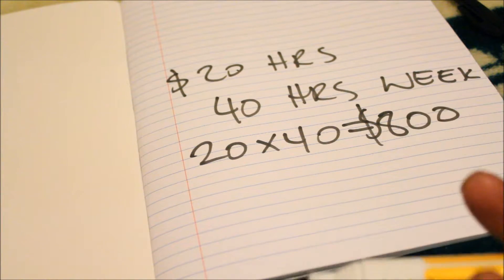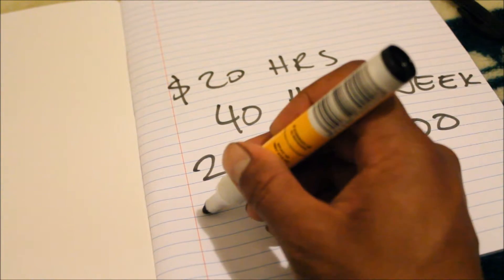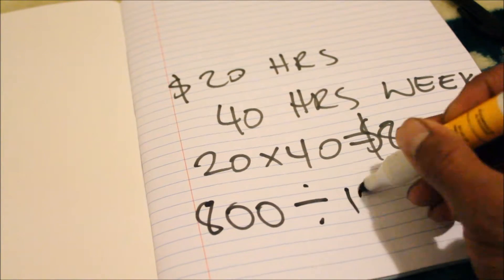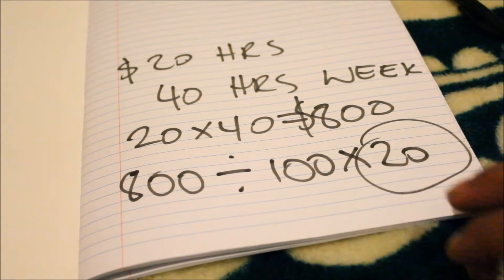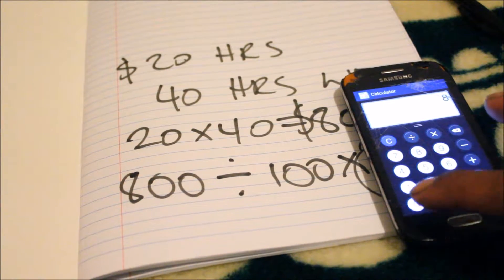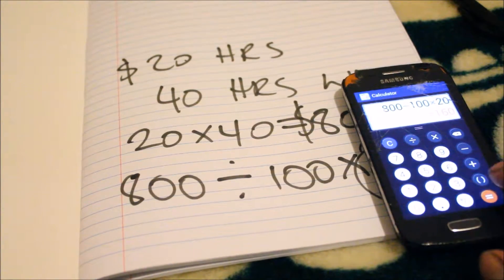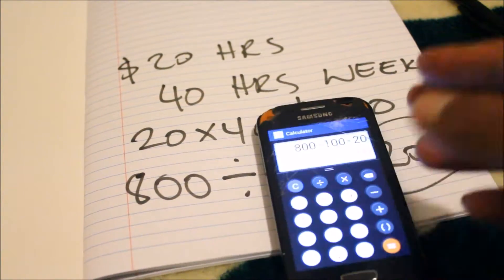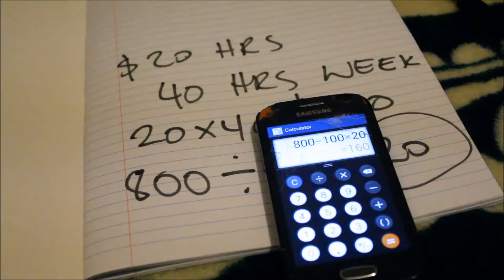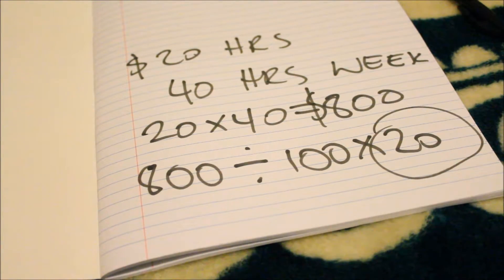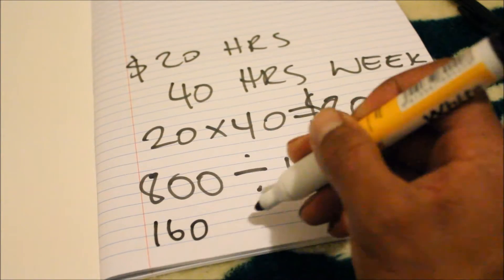Every country is different, but in New Zealand the tax percentage is 20%. So you've got to do the wage — 800 — divided by 100, times 20%. That gives you the 20% of the tax. So: 800 divided by 100 times 20, which equals 160. That $160 is your tax amount.